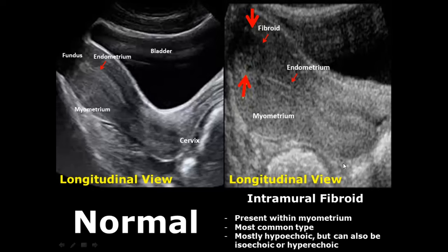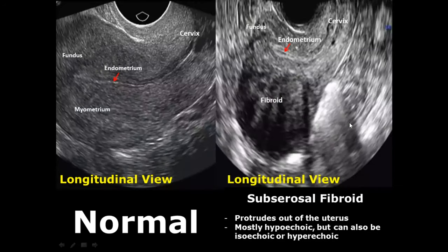Uterine fibroids, also known as leiomyomas, are benign tumors of the uterus divided into different types based on their location. The most common type is the intramural fibroid, present within the myometrium — it mostly appears hypoechoic but can also be isoechoic or hyperechoic. The subserosal fibroid protrudes out of the uterus and also gives a hypoechoic appearance most of the time.